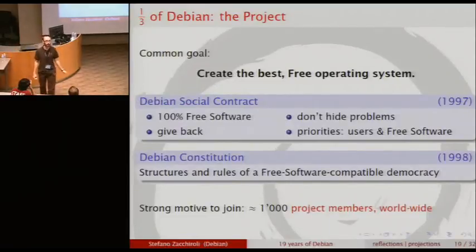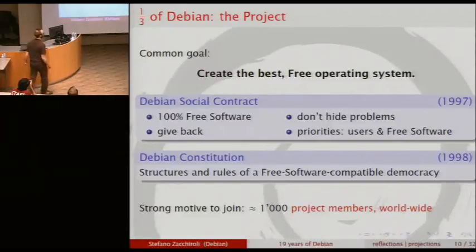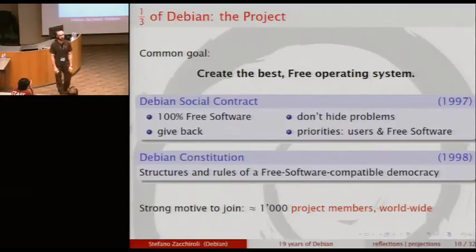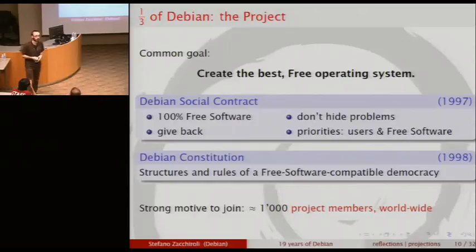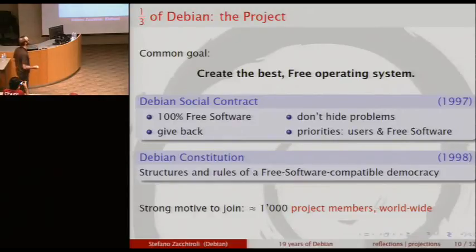The second aspect of Debian is as a project. A project, in this context, is a group of people with a common goal — and the common goal here is creating the best possible free operating system. This is the great goal that brings members of the Debian project together.